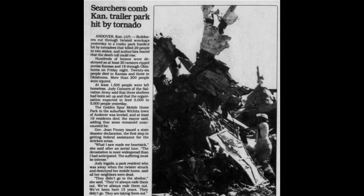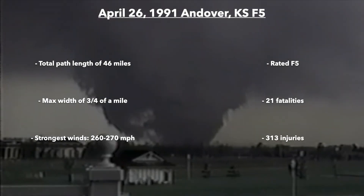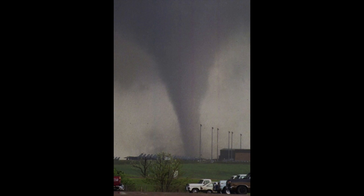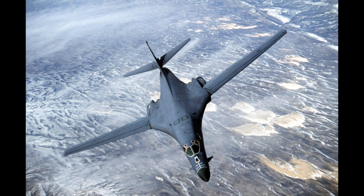The Golden Spur Mobile Home Park and much of Andover took a direct hit. The National Weather Service in Wichita was running on backup power but experienced no delays in getting warnings out. The tornado continued northeast, finally dissipating west of El Dorado by 7:10 PM. In all, the outbreak saw 55 confirmed tornadoes, with the Andover tornado's total path length at 46 miles, a maximum width of three-quarters of a mile, and peak circulation winds of 260 to 270 mph. The Andover tornado was rated F5. There were 21 fatalities — 13 from the Golden Spur Mobile Home Park alone — 313 injuries, and 589 million dollars in damage in 1991 US dollars.